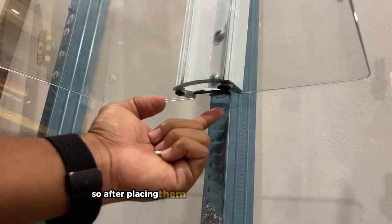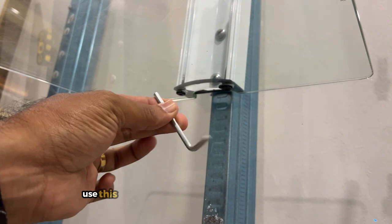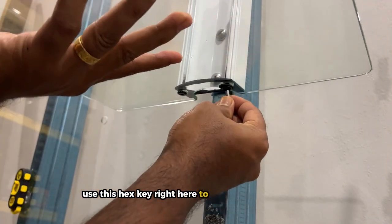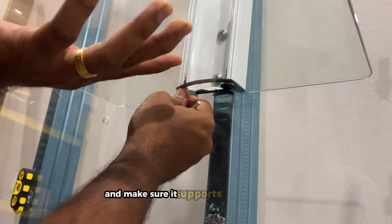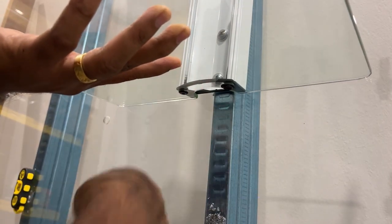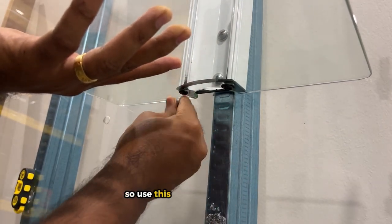So after placing them with your hand, use this hex key right here to just tighten the screws and make sure it supports the whole glass. So let's use this and just tighten them.